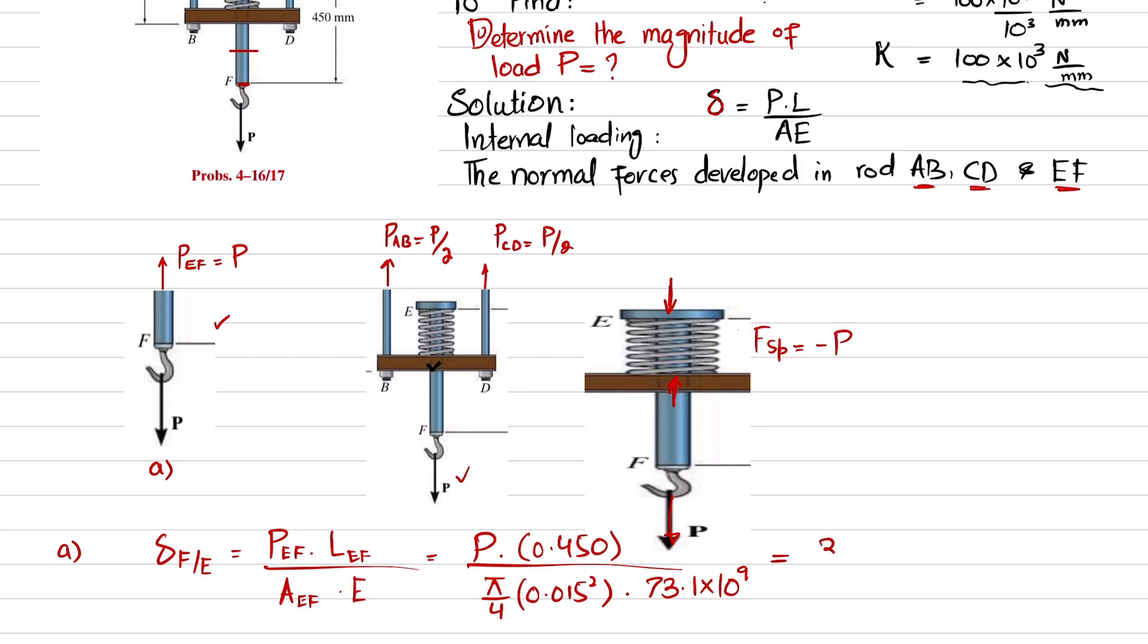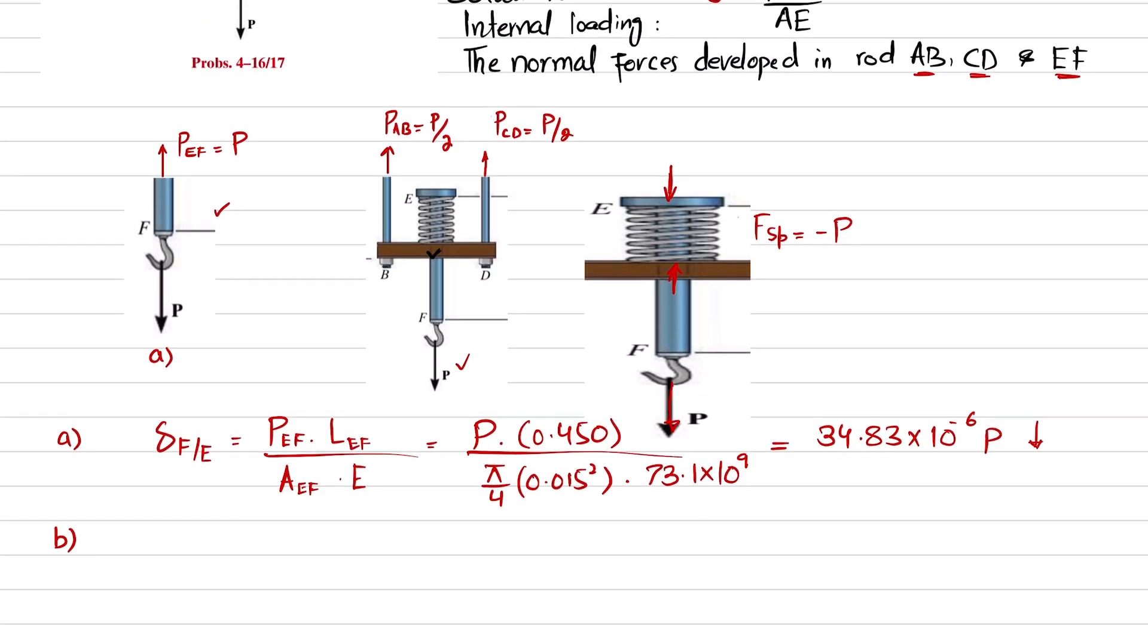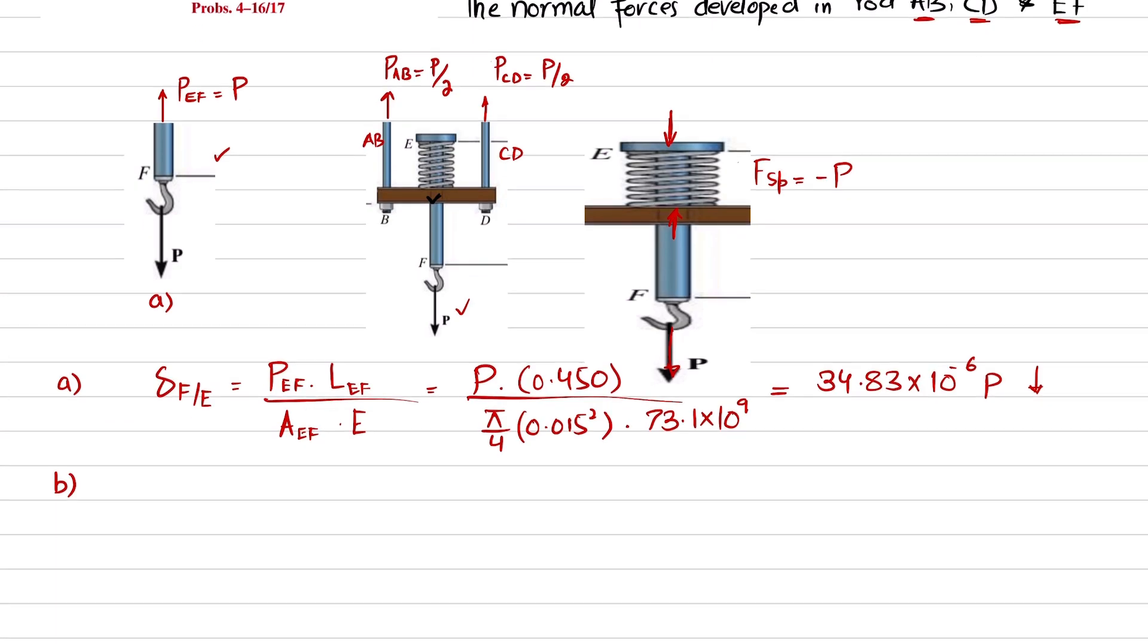So E is 73.1 × 10⁹ pascals. When you solve this, you will get the change in point F with respect to point E is 34.83 × 10⁻⁶ P, and this is a positive value, so it means that point F moves downward.